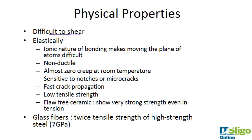Ceramics are very difficult to shear — that is, applying a force to the ceramic to make it fail in that direction. They're difficult to shear because of the nature of their bonds: ionic bonding makes moving the plane of the atoms very difficult.